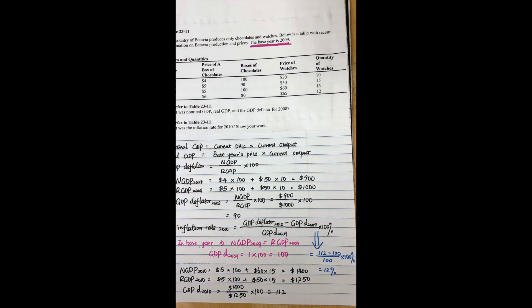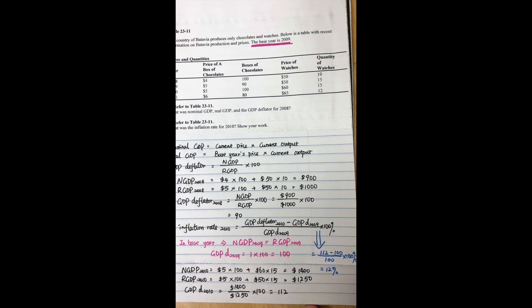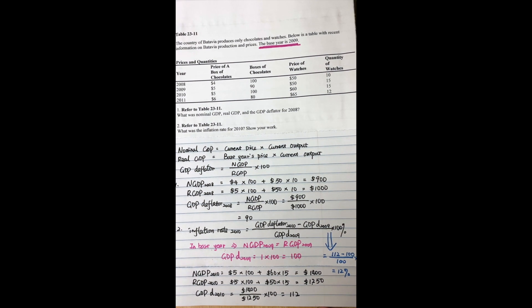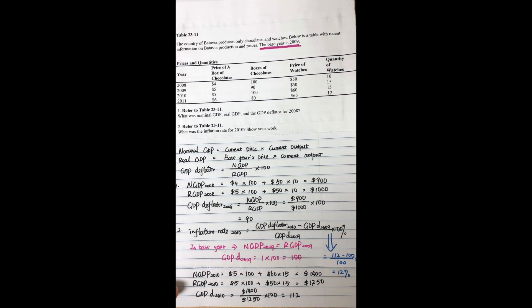This is how to figure out the inflation rate. In order to get the inflation rate, first you need to get the GDP deflator. And in order to get the GDP deflator, you need the nominal GDP and real GDP. I hope this video is helpful for you to compute nominal GDP, real GDP, GDP deflator, and inflation rate.